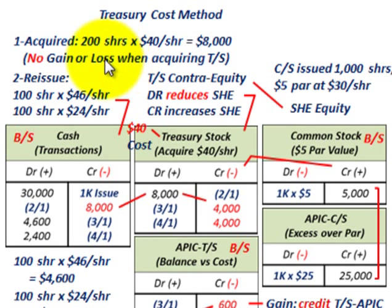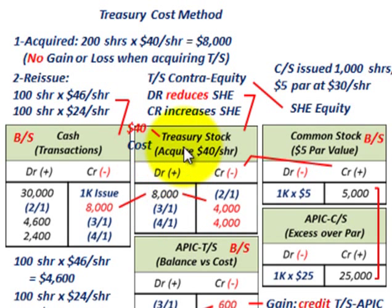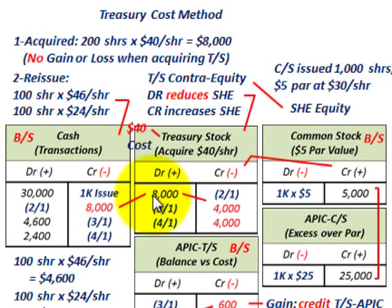There's no gain or loss when acquiring treasury stock. What we would do is debit our treasury stock account — remember, this is an equity account on our balance sheet — debited for $8,000, and our cash account would be credited or reduced by $8,000.